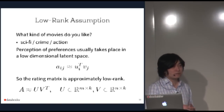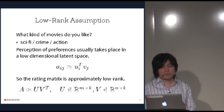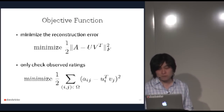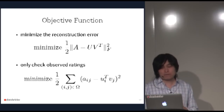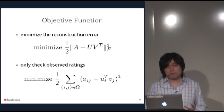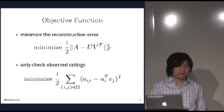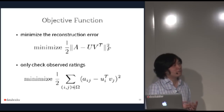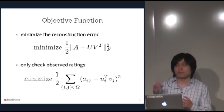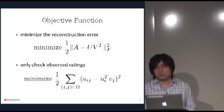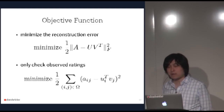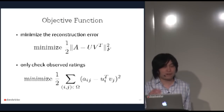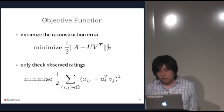The algorithm finds U and V by minimizing a reconstruction error — the Frobenius norm of A minus U^T V — but only over observed ratings since many entries are unknown. This objective is not convex, so it has no unique optimal solution. However, if we fix U and solve for V, the problem becomes convex and separable: the objective decomposes into a sum of independent sub-problems that can be solved in parallel.